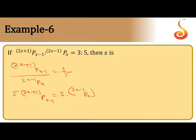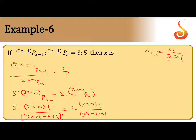Let us simplify using the factorial formula. The formula for nPr equals n factorial by n minus r factorial. Apply this formula: 5 into 2x plus 1 factorial by 2x plus 1 minus x plus 1 factorial equals 3 into 2x minus 1 factorial by 2x minus 1 minus x factorial.